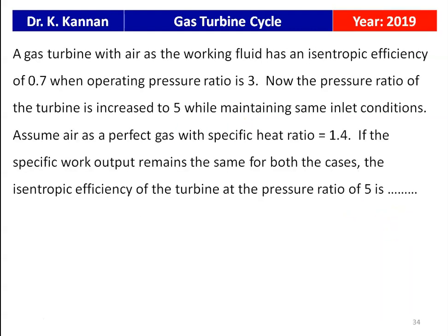The next question is from the 2019 question paper. A gas turbine with isentropic efficiency 0.7 operates at pressure ratio 3. The pressure ratio is then increased to 5 while maintaining the same inlet conditions. Assuming air as a perfect gas with specific heat ratio 1.4, if the specific work output remains the same for both cases, the isentropic efficiency at pressure ratio 5 is 0.51.